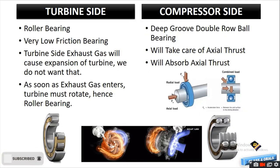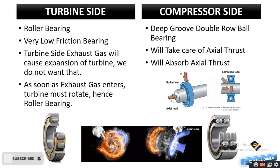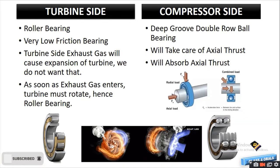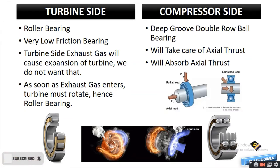On the turbine side, we are using the roller bearing, and on the compressor side, we are using deep groove double row ball bearing. On the turbine side, the exhaust gases are coming from the engine and they are having high temperature, which can cause the expansion of the turbine, which we do not want. So we want the turbine side to rotate as soon as the gas enters. Thereby, we are using the roller bearing because they are very low friction bearings and the turbine must rotate as soon as exhaust gas is entering. We use roller bearing on the turbine side.